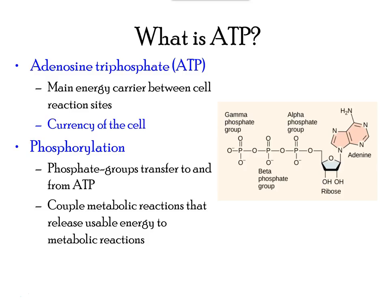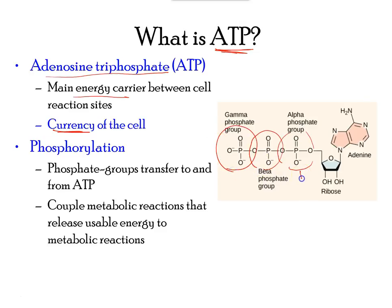The energy currency of the cell is ATP — adenosine triphosphate. It is the main energy carrier for all reactions, with energy stored in the phosphate groups at one end of the molecule. There are three phosphate groups; by breaking the bond between the third and second phosphate group, a lot of energy is released. Putting this bond together requires a lot of energy as well. Reactions that require energy are endergonic, while reactions that release energy are exergonic.